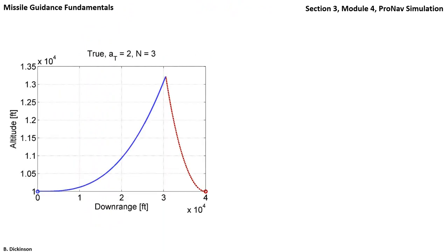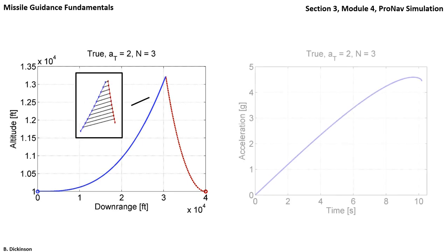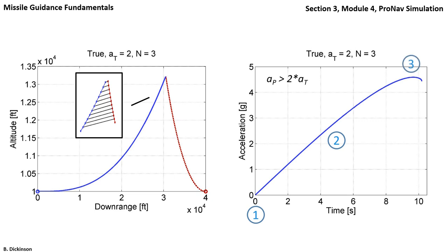So the trajectory, once again, with the collision triangle shown just before collision. The acceleration profile of the pursuer starts with zero acceleration because the pursuer and target are initially on a collision course, then the target accelerates, so the pursuer must accelerate in order to reestablish the collision course. The pursuer reaches a maximum acceleration of about 4 1/2 g's, or just over twice the target acceleration.